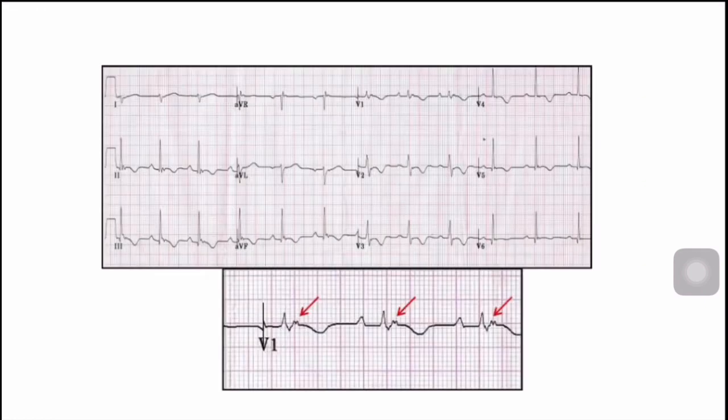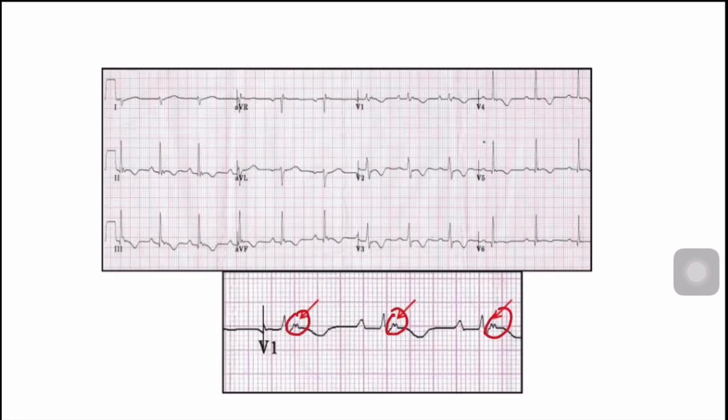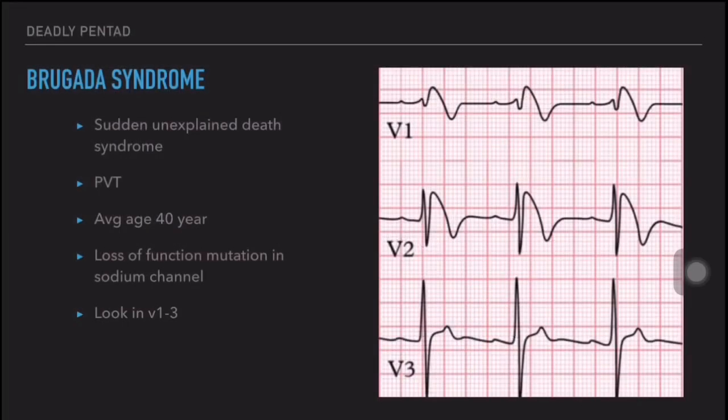In this ECG we can also see the Epsilon wave — the positive wave after the QRS complex. Coming to the next ECG pattern: Brugada syndrome.